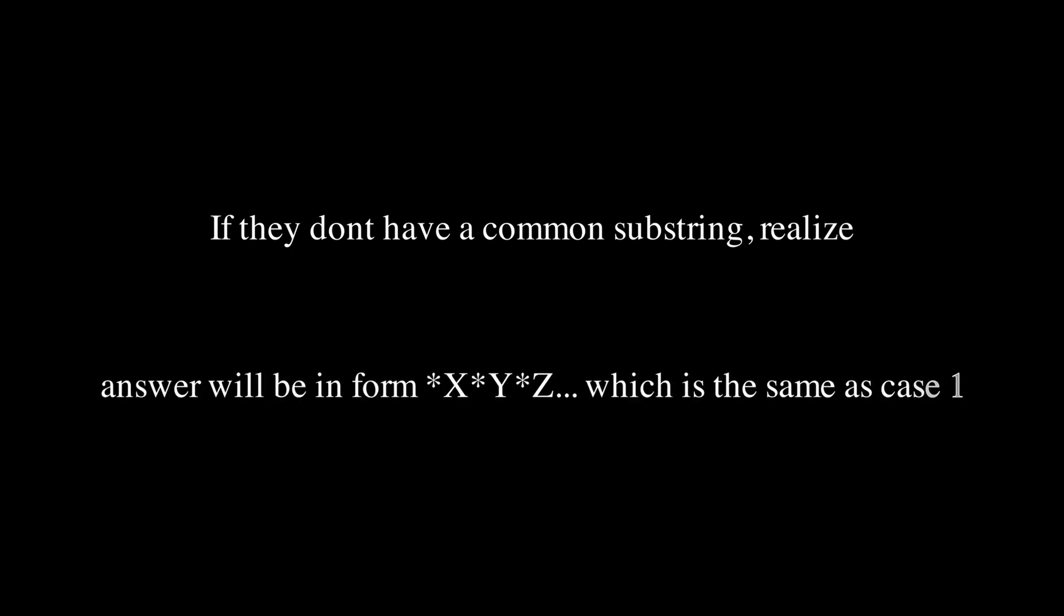So consider 2 strings that don't have a common substring of at least length 2. That means that our pattern, or the string we have to produce, cannot have 2 letters consecutively next to each other, because that means there is a substring of at least length 2. So our construction would be an alternating pattern of asterisks and letters, but that means we can't have asterisks on both sides, so that means we can just reduce it down to the first case, because the asterisks can only be on one side of some letter.